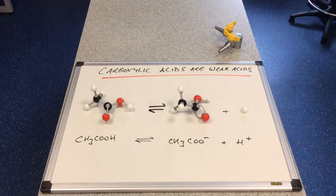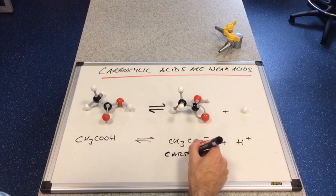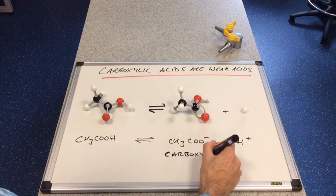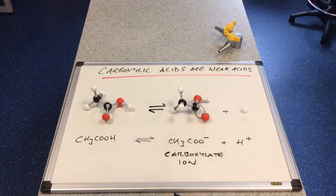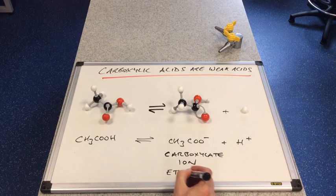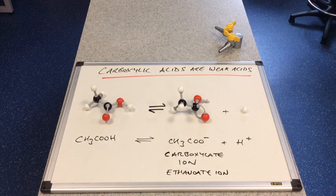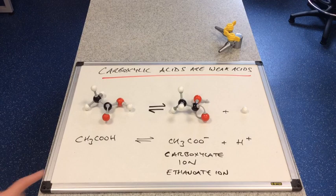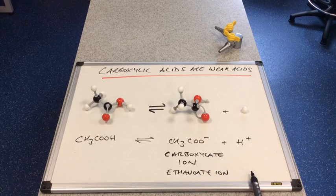One thing I would like to point out here is this is known as a carboxylate ion. And this carboxylate ion is called ethanoate. So ethanoic acid will partially dissociate into the ethanoate ion and the H-plus ion.